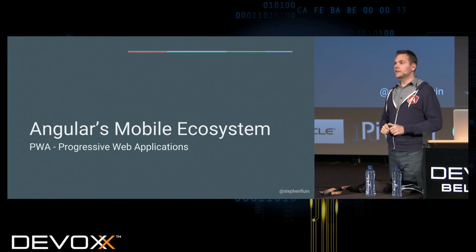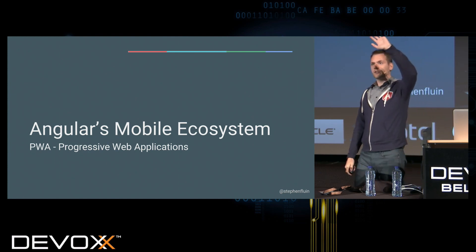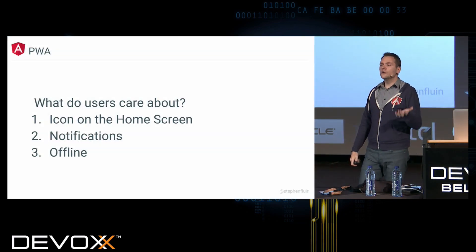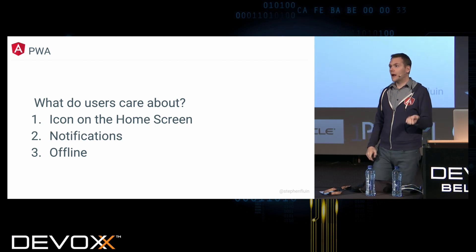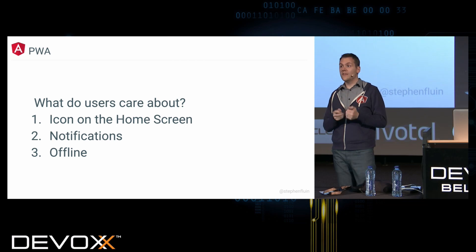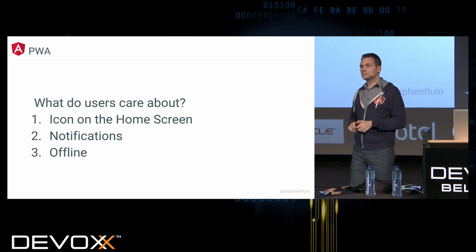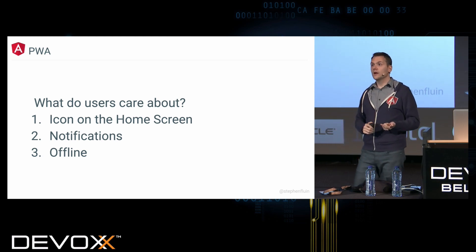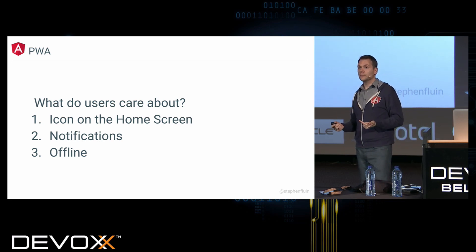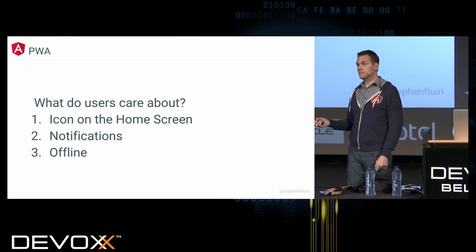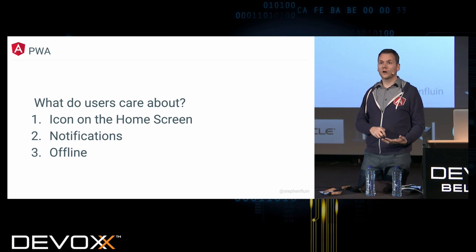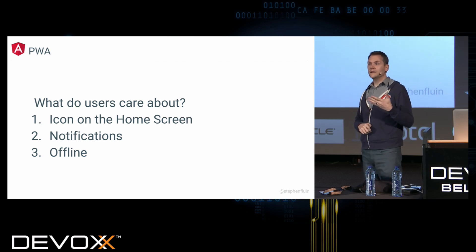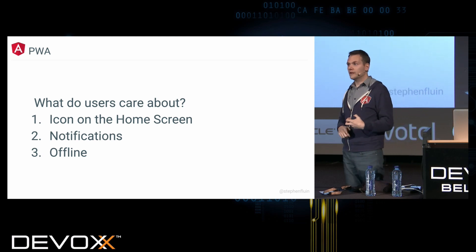The next piece of the ecosystem is progressive web applications. To understand PWAs, it's important to go back to what users expect. Every user wants an icon for your application on their home screen — they don't want to launch a browser and navigate to your site. They want notifications, because applications aren't just living when users interact with them but are driven by services running all the time. And lastly, users want your application to work offline — the idea that my network connection is going to be unreliable and I need to take ownership of that in order to build a great experience.